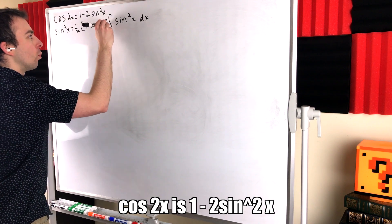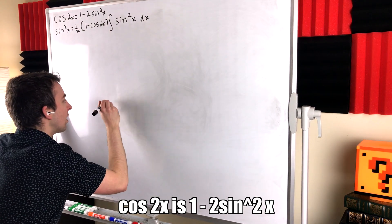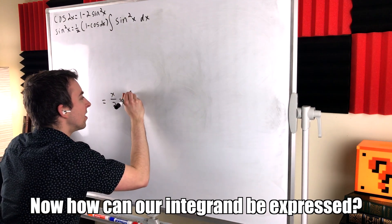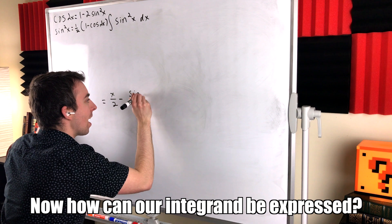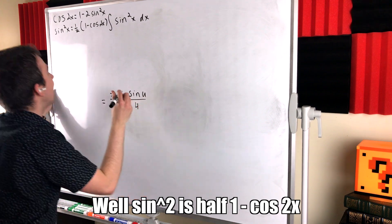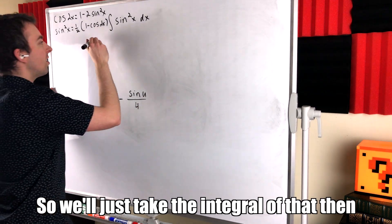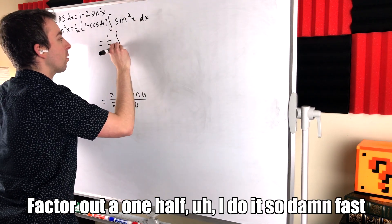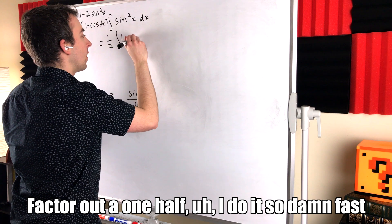Cos 2x is 1 minus 2 sin squared x. Now, how can our integrand be expressed? Well, sin squared is half 1 minus cos 2x, so we'll just take the integral of that then. Factor out a 1 half.